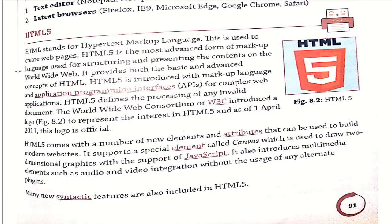What is HTML? HTML is a Hypertext Markup Language used to create web pages. HTML5 is the most advanced form of markup language, which is used for structuring and presenting contents on the worldwide web. To make web pages, we use HTML.